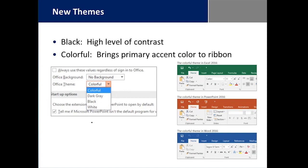We have new themes with 2016. The first new theme is simply called Black, which is your high contrast option — useful if you need or prefer more contrast on screen. There's another one called Colorful, which brings the primary accent color to the ribbon. Excel's icon has always been green, PowerPoint orange, and Word blue, so this puts that primary color onto the ribbon for contrast, helping you quickly identify which program is open when you have many windows.